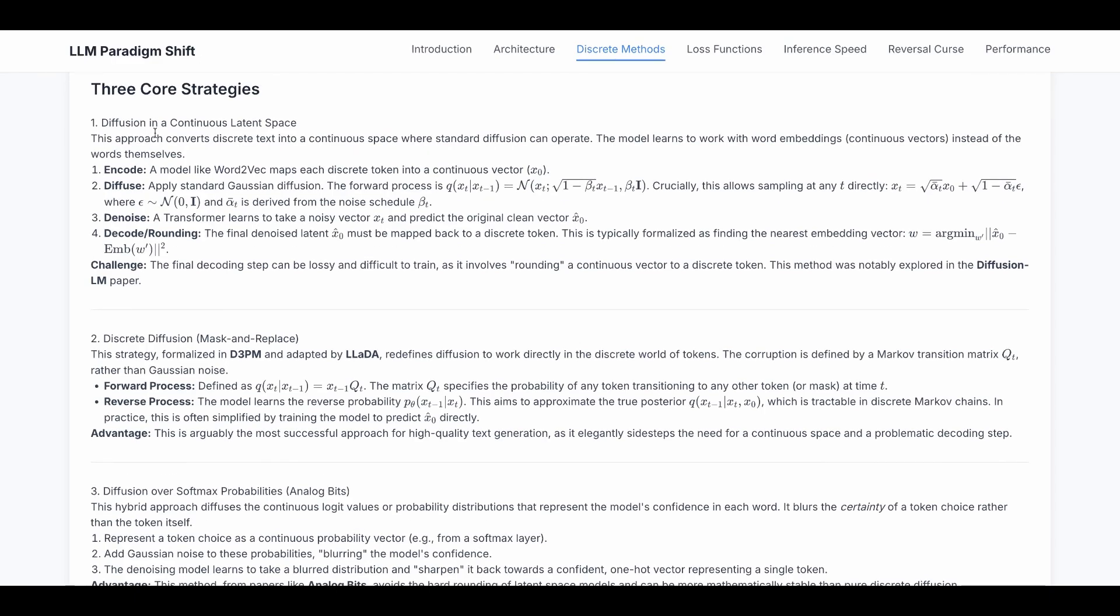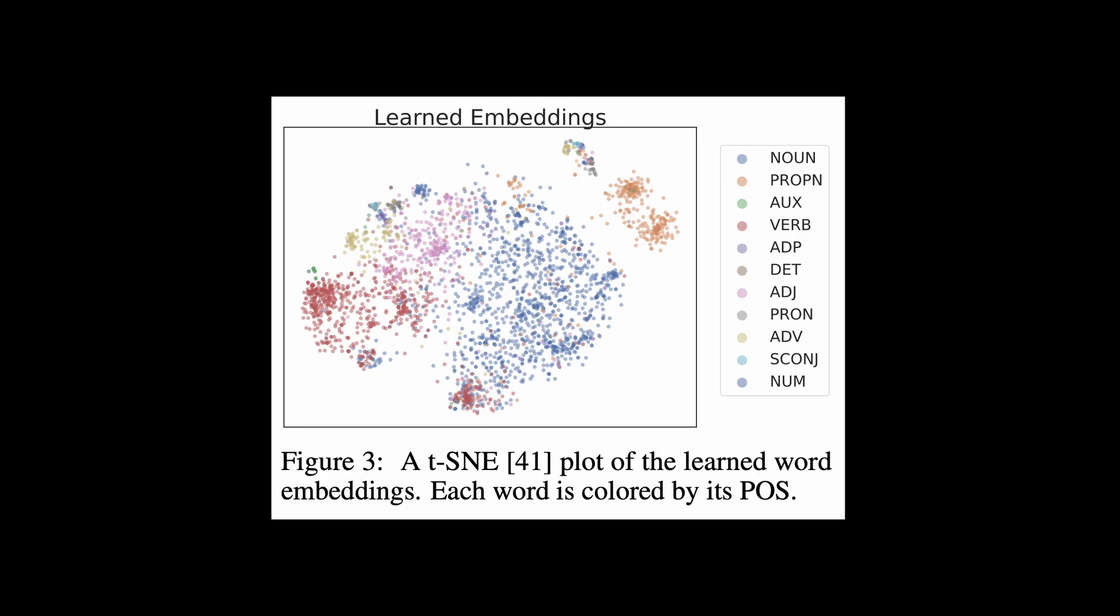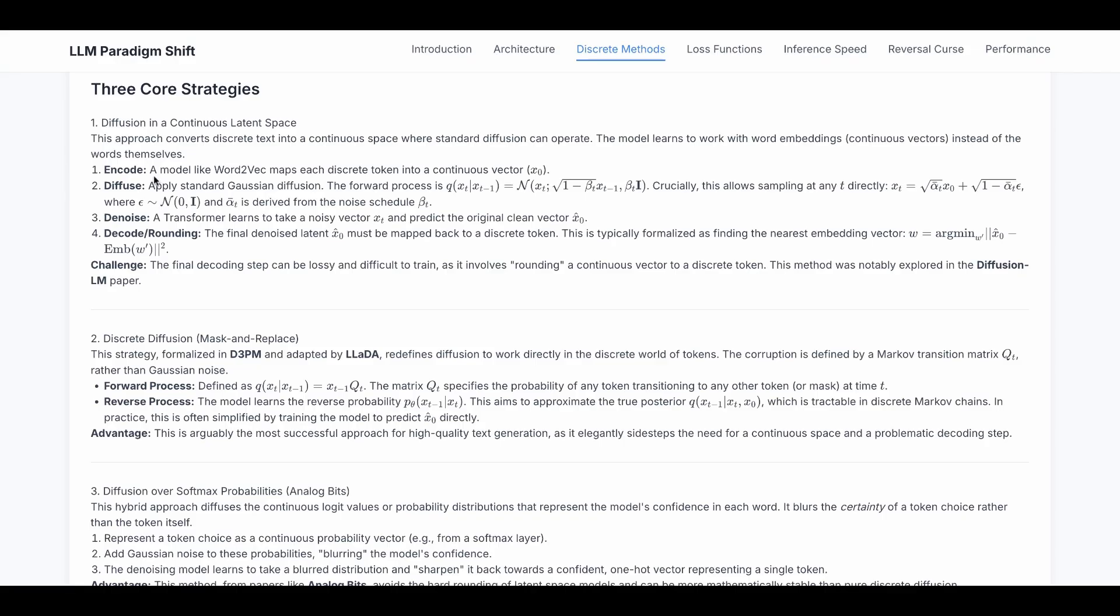Next is the diffusion in a continuous latent space. This approach converts discrete tags into a continuous space where standard diffusion can operate. The model learns to work with word embeddings, that is continuous like the image pixel space, instead of the words themselves. So there are extra steps. We use a model like Word2Vec and map each discrete token into a continuous vector. And then we do the standard forward diffusion. We apply Gaussian noise for each step and the noise at each step is a function of the schedule.